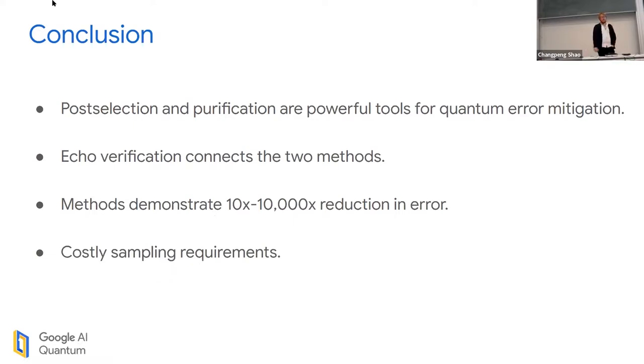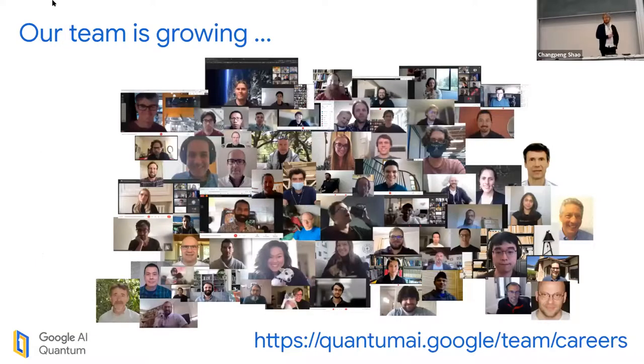In conclusion, we have some nice new techniques for error mitigation. Watch this space - we'll have a couple of new papers out soon. They are pretty costly regarding sampling requirements. We're working on that. They do demonstrate pretty good error mitigation, including in experiment. Just to follow on to the claims every other person was making, we are hiring. We have a job posting open in Munich if anyone's interested. Thank you all for your time.